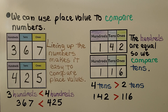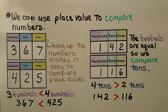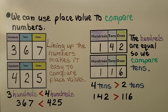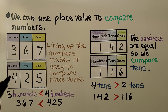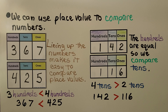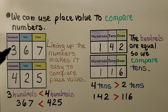We can use place value to compare numbers. Lining up the numbers on top of each other makes it easy to compare place values — hundreds on top of hundreds, tens on top of tens, ones on top of ones. We can see three hundreds is less than four hundreds, so 367 is less than 425. This one has more hundreds, so it's the greater number.